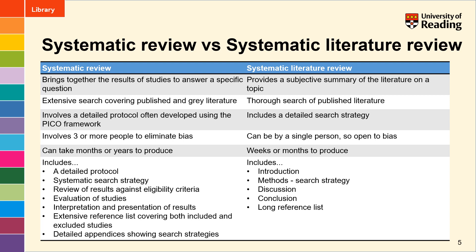This slide is just to draw out that in a bit more detail. So with a systematic review you're bringing together results of studies to answer a specific question, whereas a systematic literature review is providing a subjective summary of the literature on a topic. A systematic review would include an extensive search covering both published and may also include grey literature, whereas a systematic literature review would focus very much on the published literature and not include grey literature. A systematic review would have a very detailed protocol often developed using a framework such as the PICO framework, and you can talk to your supervisor about what sort of framework you should use. Whereas a systematic literature review would just include a detailed search strategy — there wouldn't be a protocol.